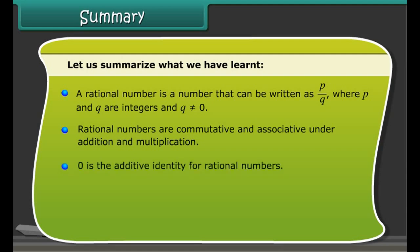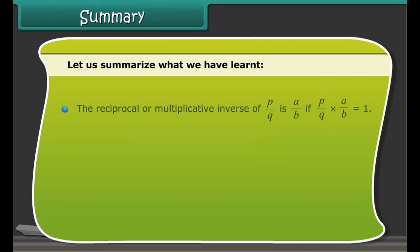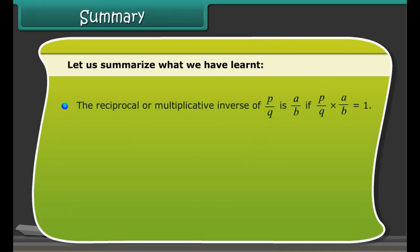Summary: let us summarize what we have learned. A rational number is a number that can be written as p upon q, where p and q are integers and q is not equal to zero.